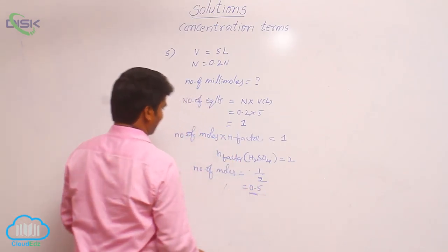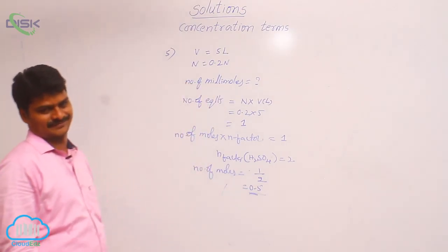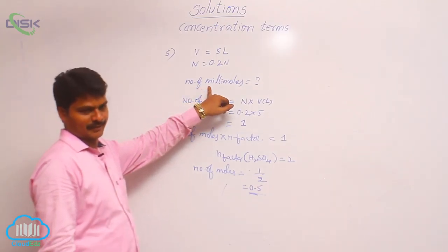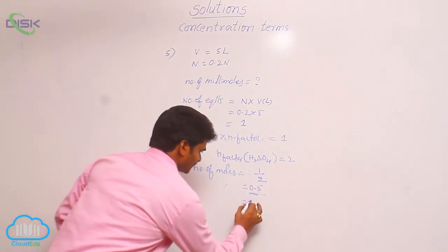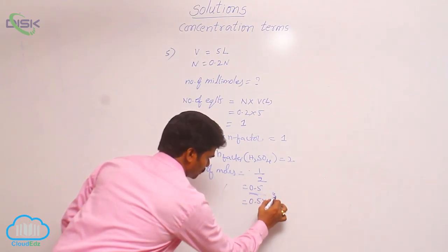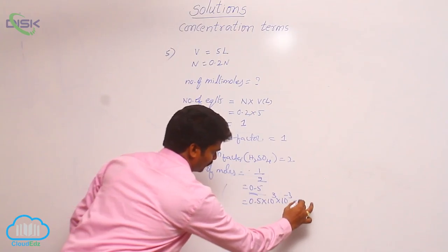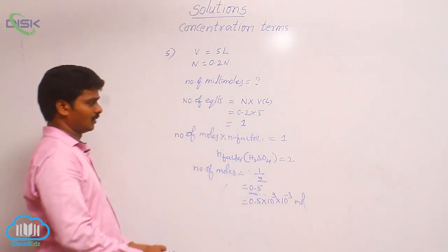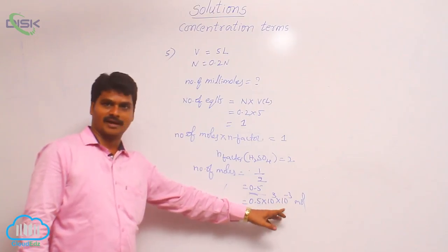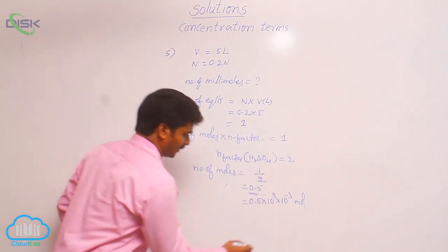But here, asked for millimoles, not moles. In the question, number of millimoles we have to find out. So see here, 0.5 into 10³ into 10⁻³, I am writing moles. So it will not change the answer. 10³ into 10⁻³ will not change the answer.